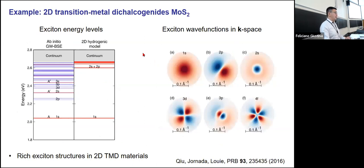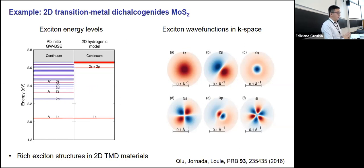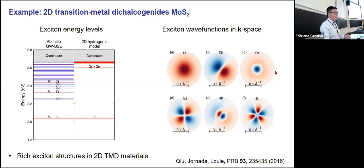Looking at the BSE Hamiltonian solutions for monolayer MoS2, the eigenvalues show discrete excitonic states. The red exciton states are bright (optically active) and the blue ones are dark (not visible in optical experiments). There is a rich structure, very different from the 2D hydrogenic model, due to the complex behavior of the dielectric function in real 2D materials. The exciton wave functions plotted in k-space show the 1S state as a sphere, the 2S state with a nodal structure, and higher states (2P, 3D, 3P, 4F), revealing rich physics accessible through the GW-BSE approach.